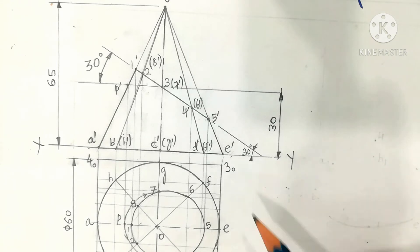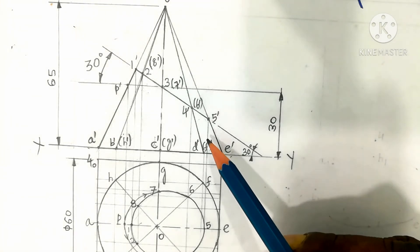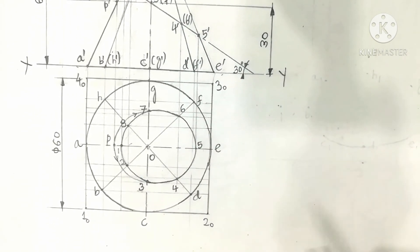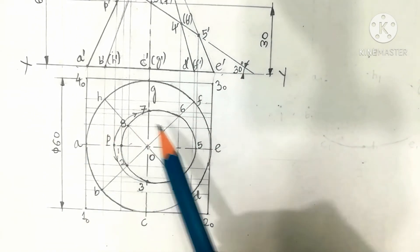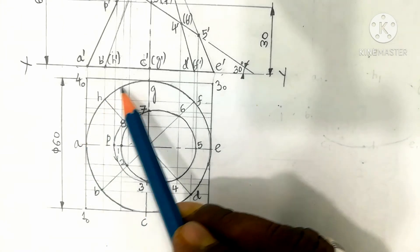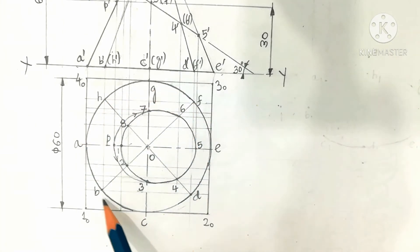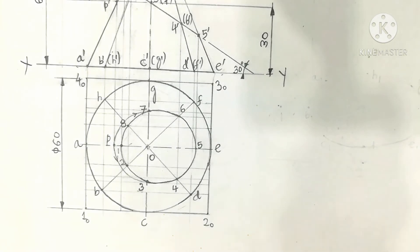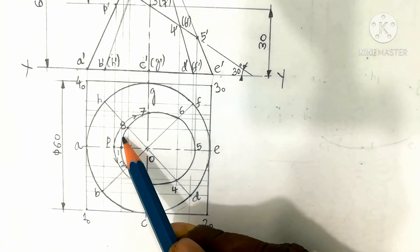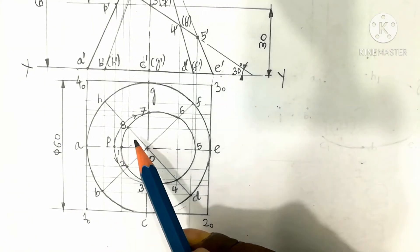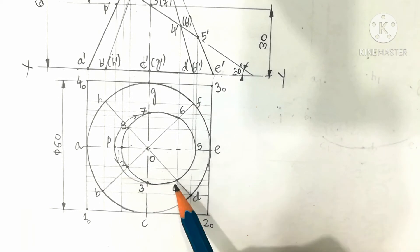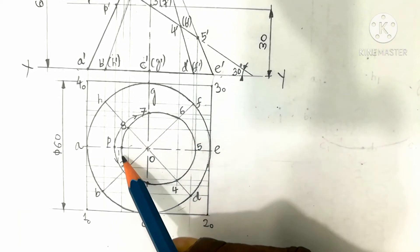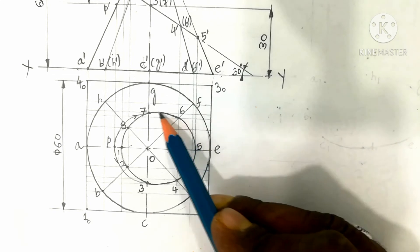This is the front view. The corresponding top view is shown below the XY line. The outer circle represents the base part of the cone, which is circular in shape. The ellipse shown inside, marked with points 1, 2, 3, 4, 5, 6, 7, and 8, represents the cut portion as seen in the top view.